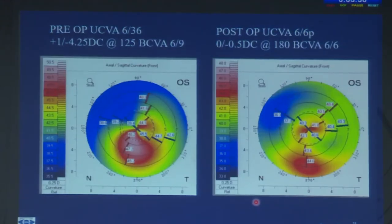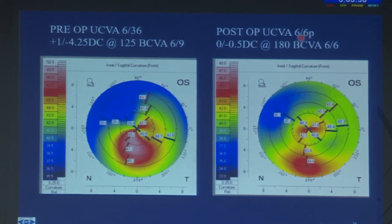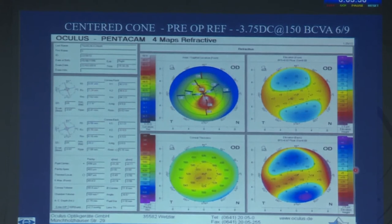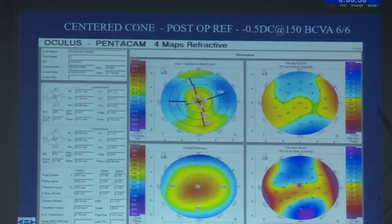In a case example: pre-op uncorrected vision was 6/36, BCVA 6/9. Post-operatively the patient achieved 6/6 unaided vision, and with just 0.5 diopter cylinder improved to 6/6. This is an example of a centered cone where on the posterior float, the most elevated area is within the central 3mm zone. These patients do extremely well with 6/6 vision.